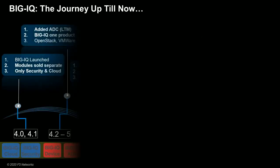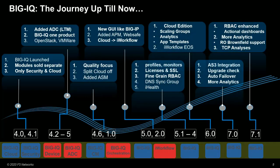It all started with Enterprise Manager, F5's first Element Manager. It was replaced by BigIQ somewhere in 2014, with the first version being 4.0. Over the releases, features have been added and issues fixed. Earlier releases focused on BigIQ device management, and more ADC features were added over time. LTM was added in version 4.4, and APM, ASM, and other modules followed. Most recently, version 7.1 included SSL Orchestrator as a module manageable through BigIQ.